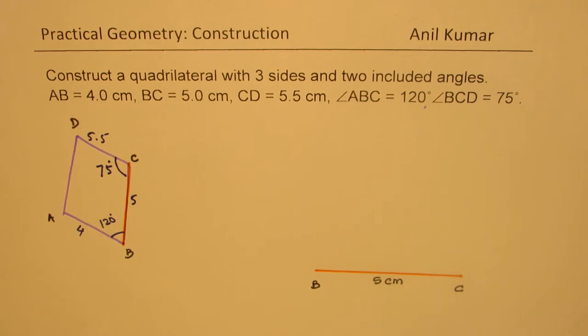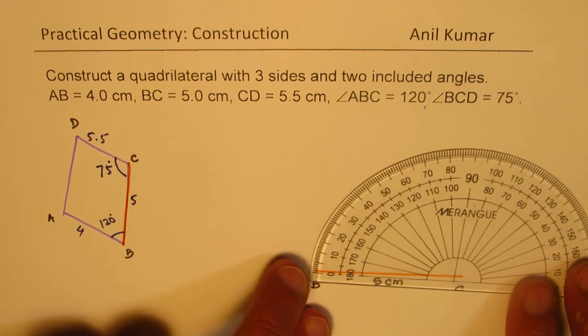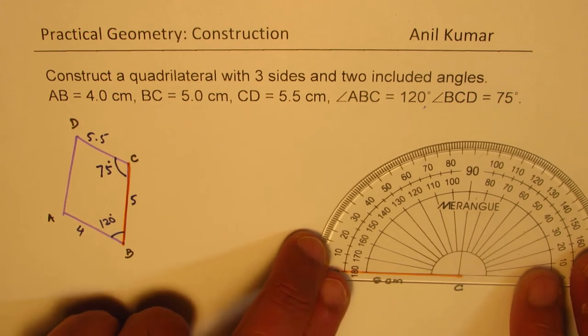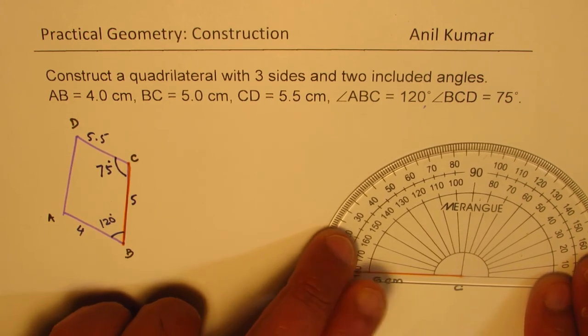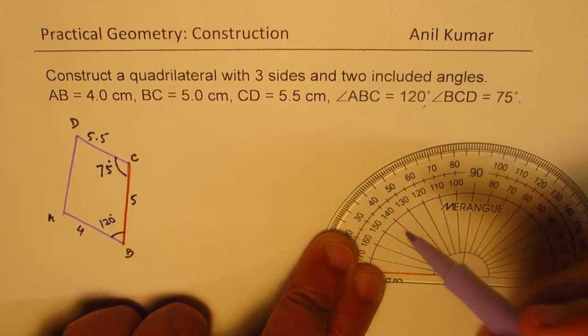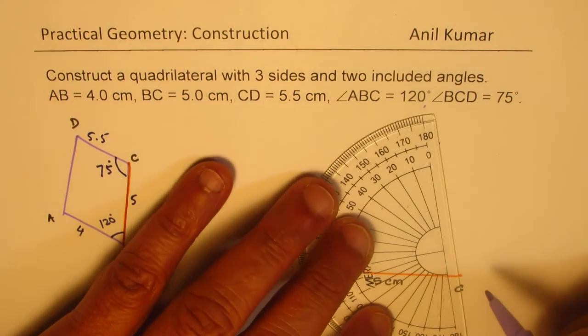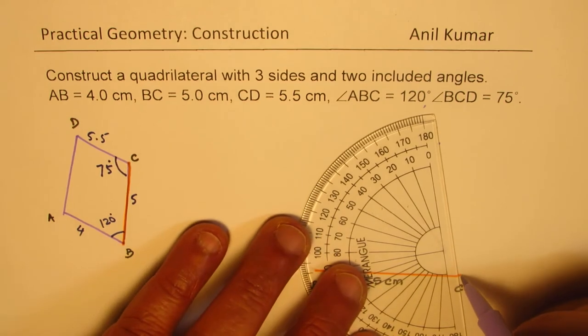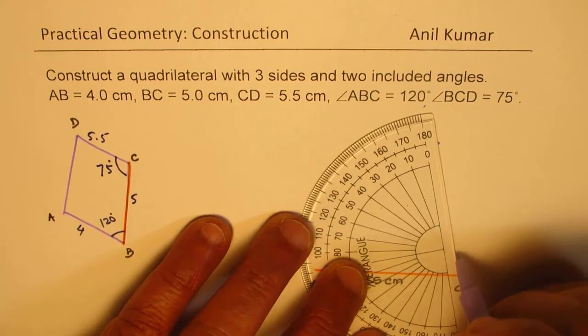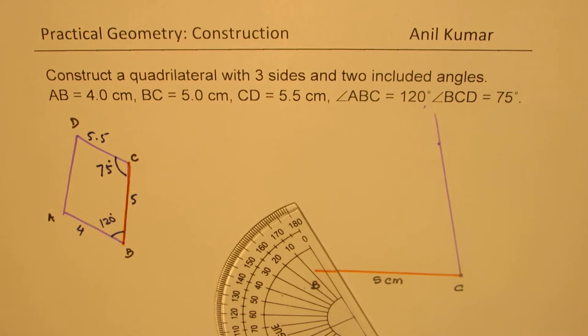Now we can make 75 degrees angle at C. We can just join and extend the line.